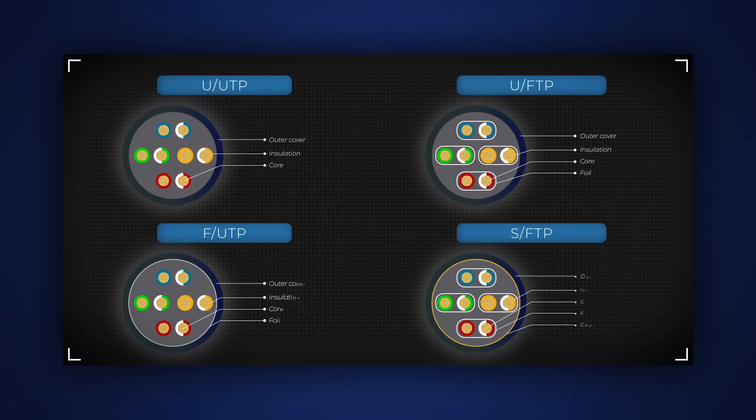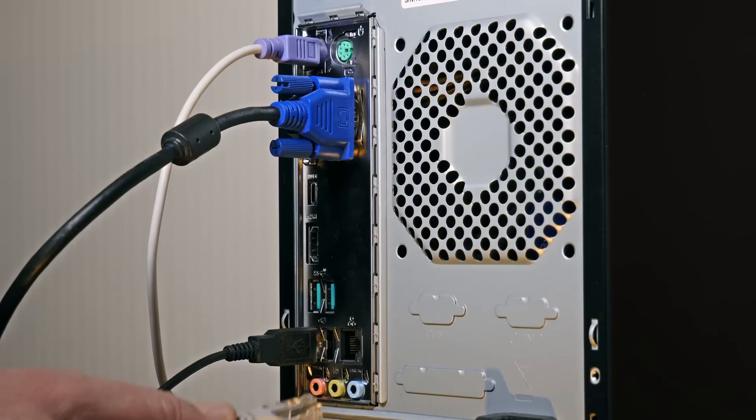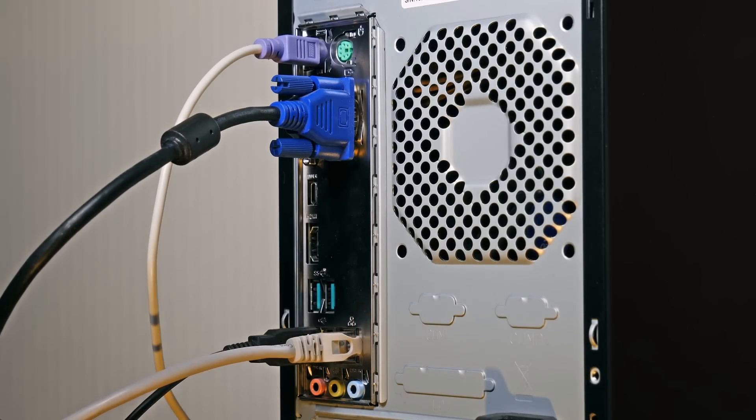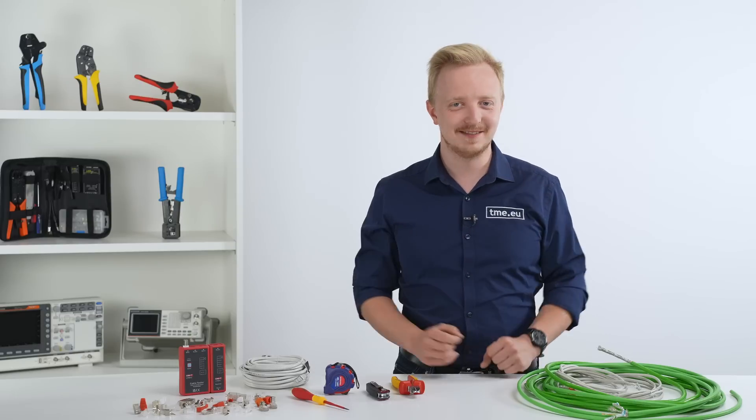UTP cable for example will have no shielding whatsoever, only the twisting and the plastic isolation preventing the bits from scrambling. It is designed to work in places without interferences such as the area between the computer and the wall. And it is very flexible.